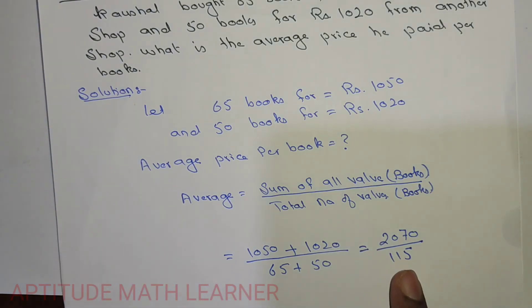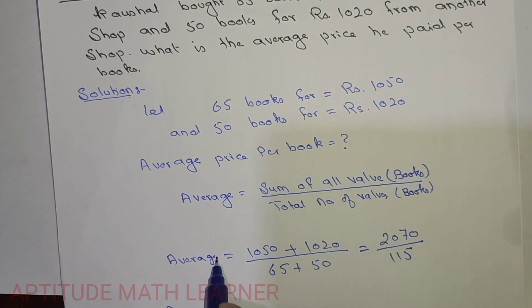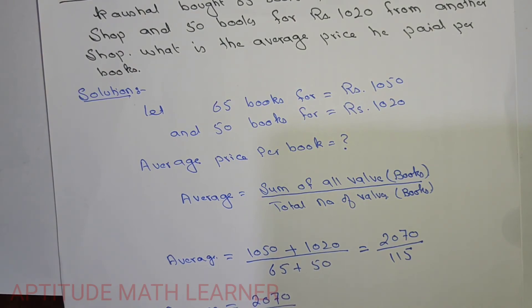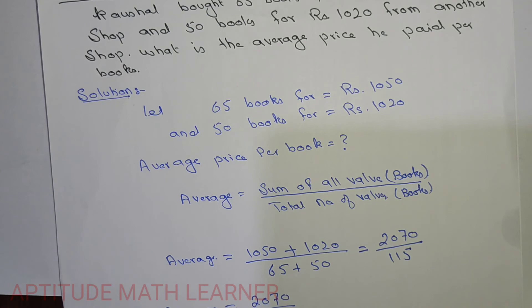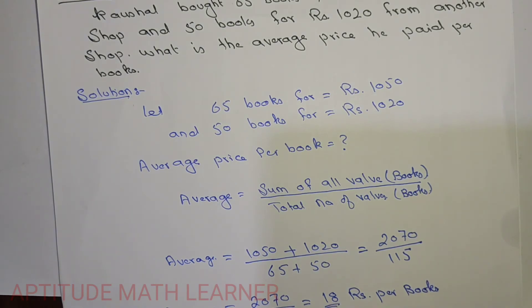This is the average. So here we are having the average, that is 2070 upon 115. If we divide 2070 upon 115, we get the answer 18 rupees per book. So that is the average price.